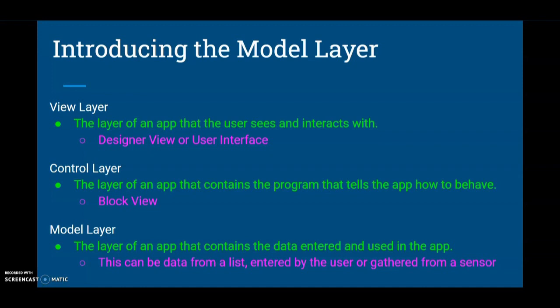Today we're going to look at our third layer: the model layer, sometimes called the data layer. This layer can contain data entered and used in the app — data from a list, data entered by a user, or data gathered from a sensor.